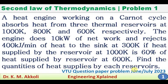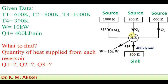We can explain this using the heat engine diagram. The heat engine receives heat from three reservoirs: one at 1000 Kelvin, another at 800 Kelvin, and a third at 600 Kelvin. For convenience, the heat supplied by the 600 Kelvin source is taken as Q1, heat supplied by the 800 Kelvin source is Q2, and heat supplied by the 1000 Kelvin source is 60% of Q1, that is 0.6 Q1.